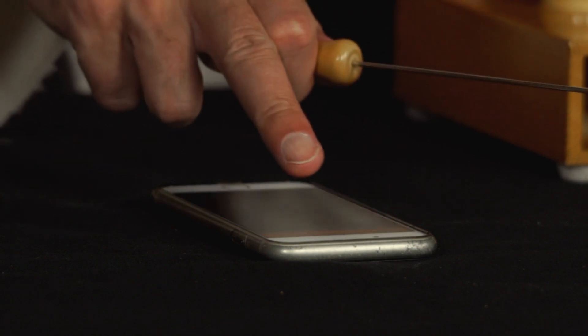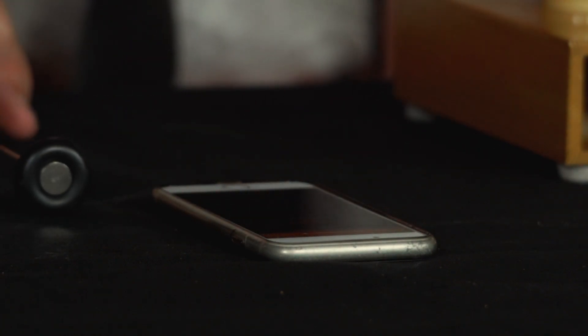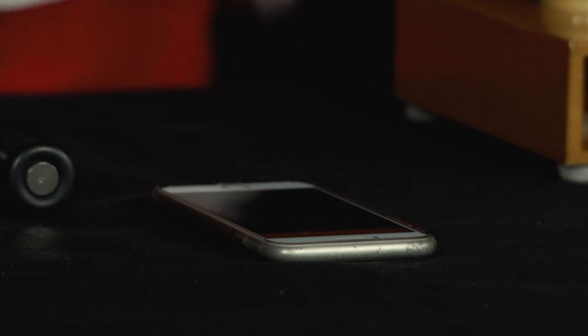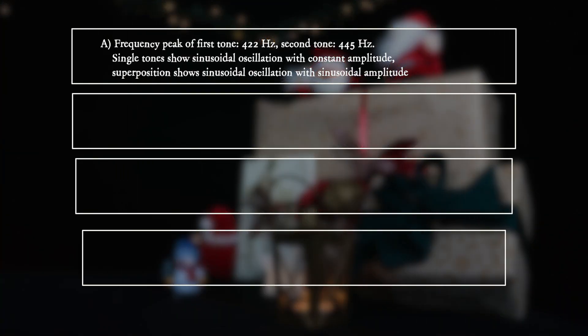What does he observe at frequency peaks and amplitude as a function of time? Option A: Frequency peak of first tone 422 Hz, second tone 445 Hz. Single tones show sinusoidal oscillation with constant amplitude.